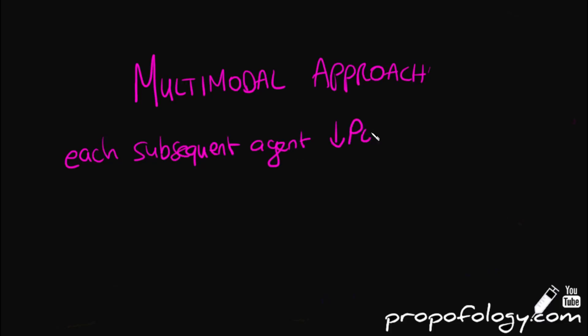You're going to hear it again: the multimodal approach to prescribing antiemetics. You now know that we've got loads of different receptors that act on the vomiting center, so you need to try to block them. And it's really important in anesthetics because each subsequent agent you use to decrease postoperative nausea and vomiting will decrease it by a third. This is called the rule of thirds.